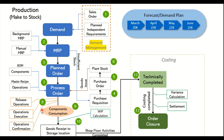The components are moved to the shop floor and manufacturing begins following the sequence of operations. Once an operation is executed or completed, the user confirms it in SAP — posting that the operation is complete, recording the yield generated, and logging the actual hours incurred on that work center. For example, if a granulation operation has a planned duration of 15 minutes but actually took 18 or 20 minutes, those actual values are posted at the time of confirmation.